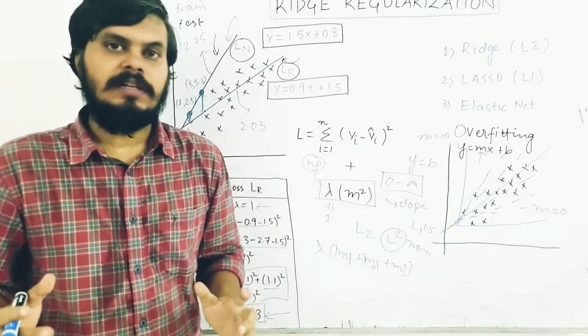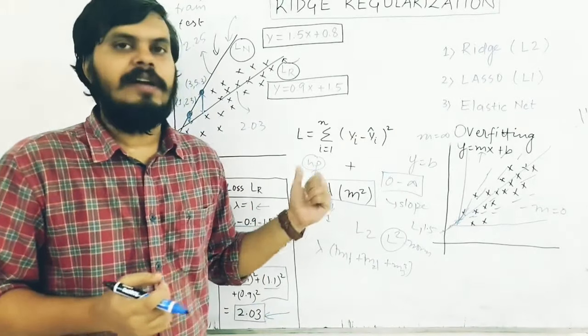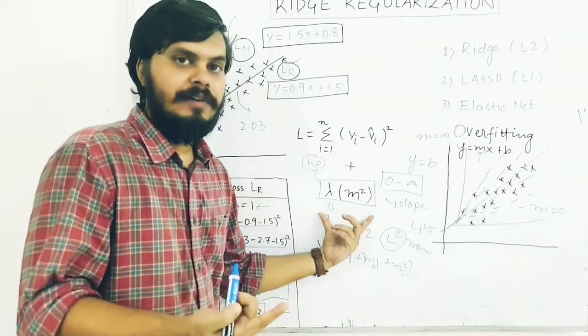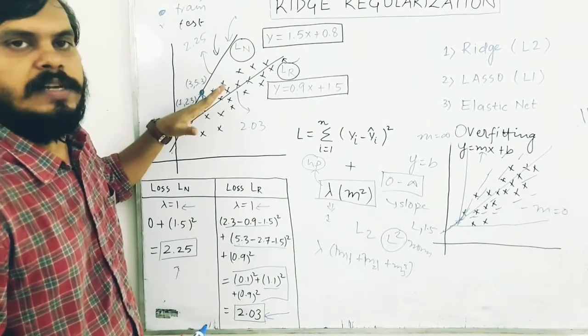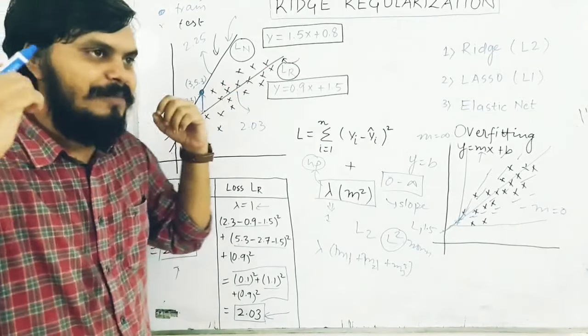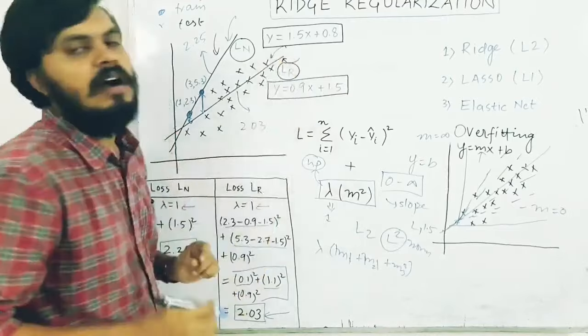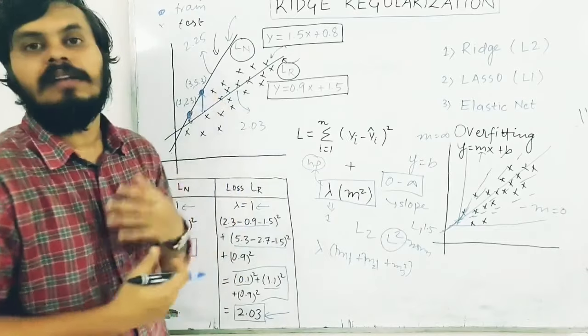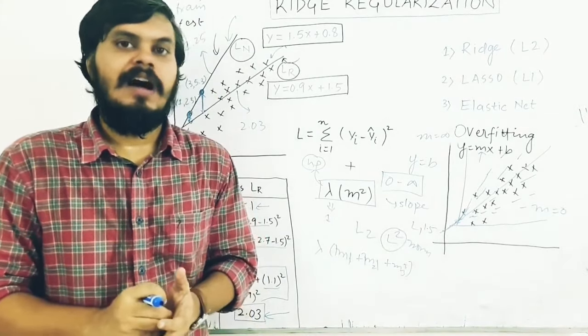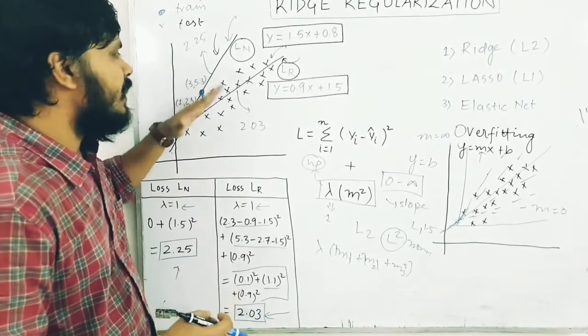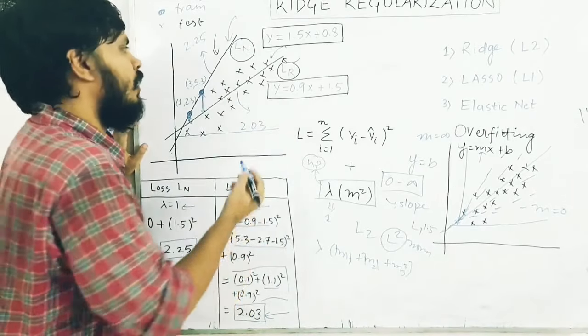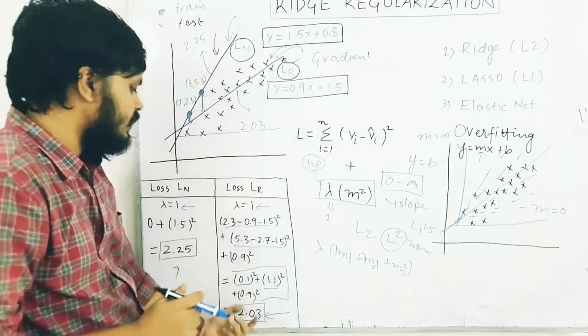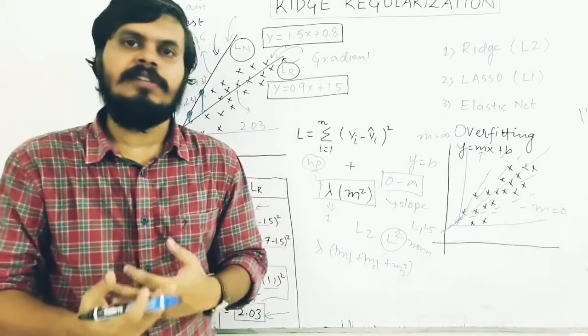I hope this whole video makes sense. Let me summarize: The whole idea behind regularization is to add this regularization term which will reduce your slope slightly. This will help you choose the line that reduces error overall. Because of this, your bias will increase slightly, but your variance will reduce significantly, reducing overfitting.